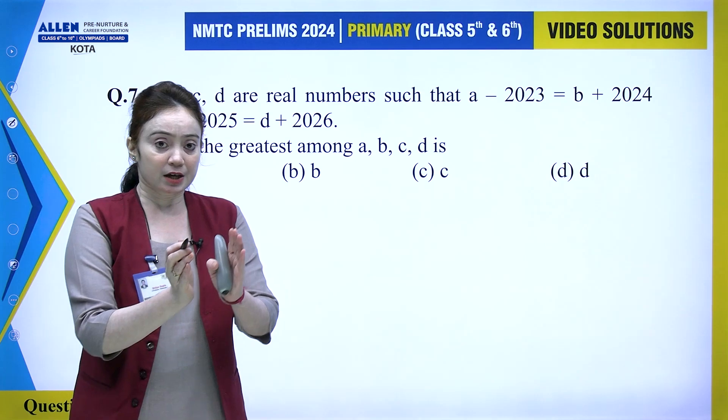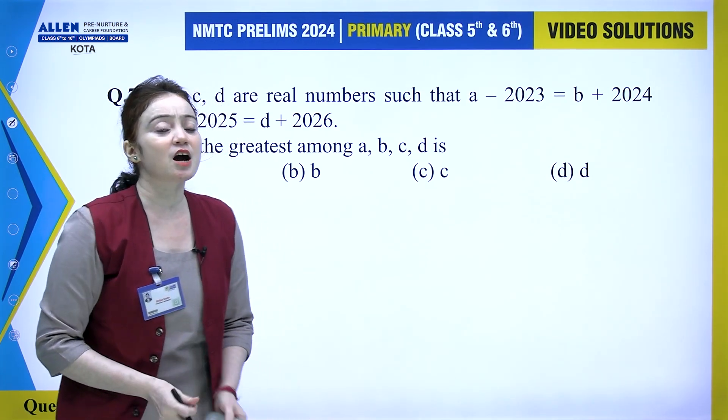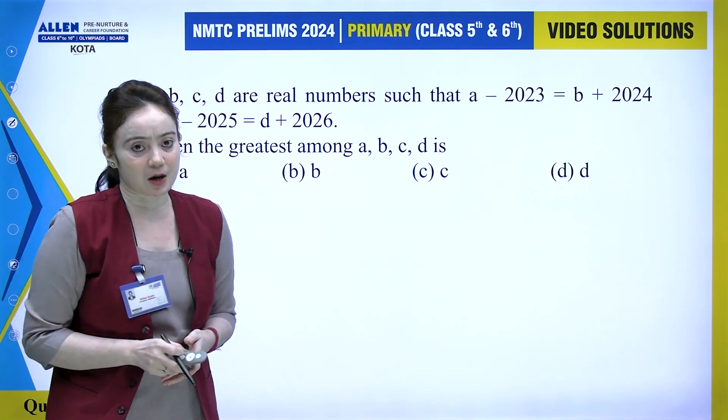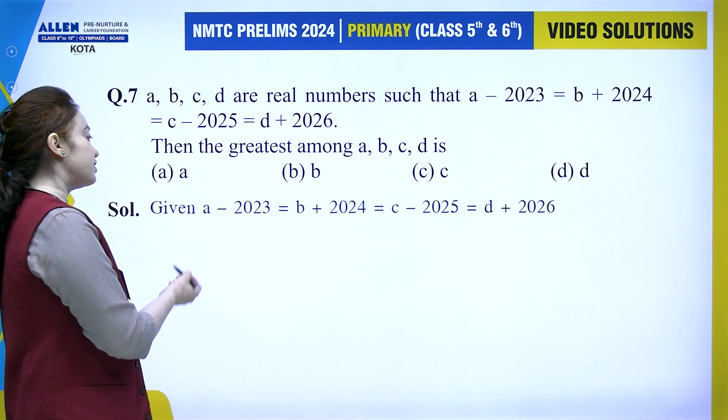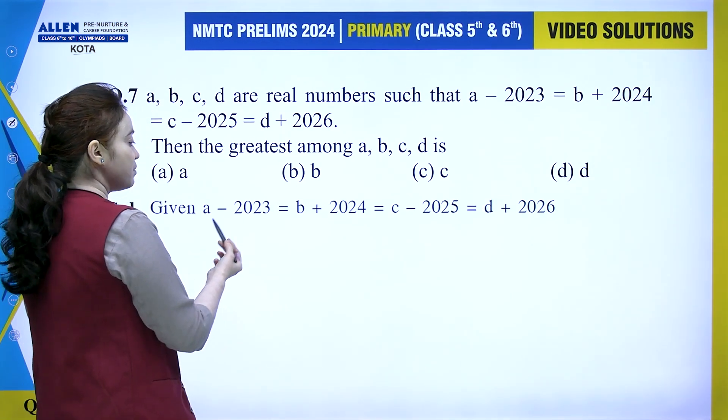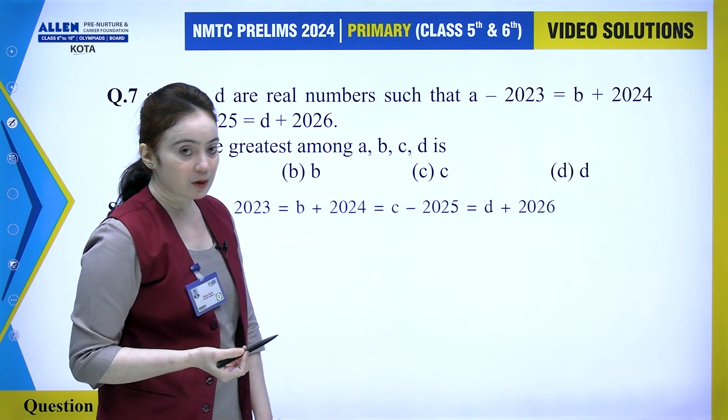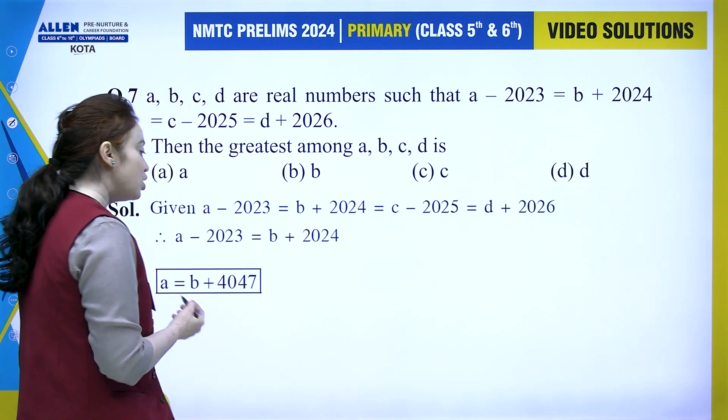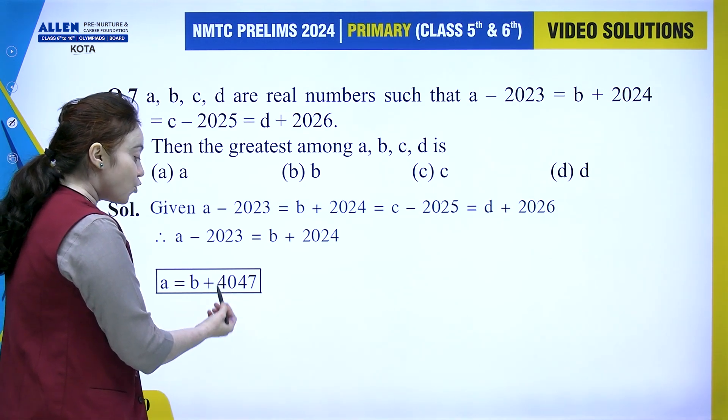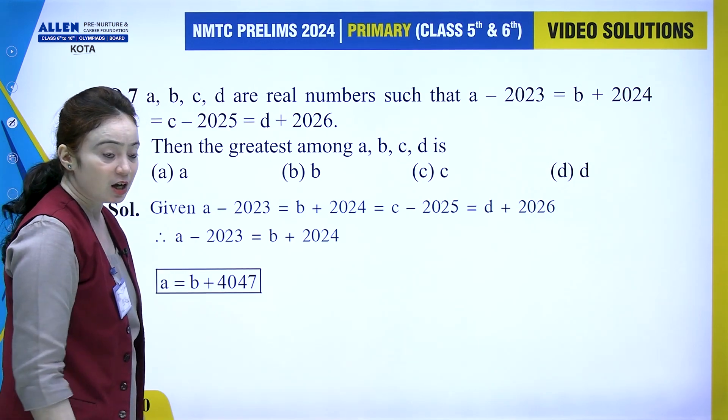When we see this type of question, we try to express all numbers with respect to one variable. We can make them equal to any one variable. If we take the first two values, a minus 2023 equals b plus 2024, then from here we get b equals a minus 4047. We simply shifted this across and got this value.